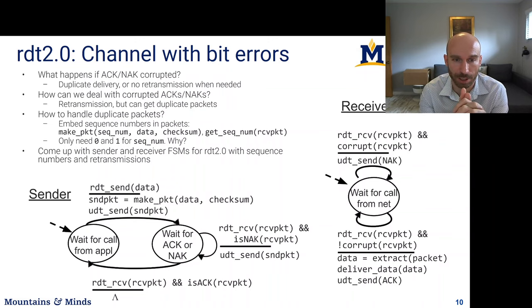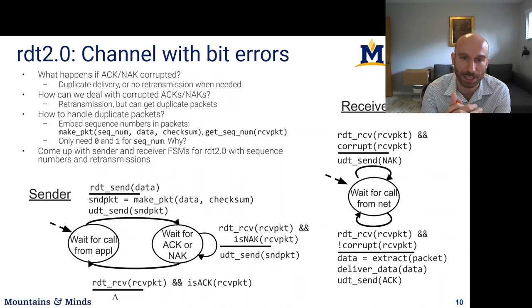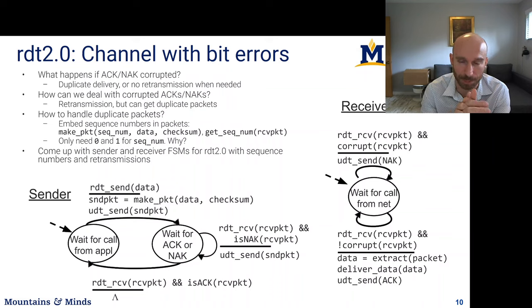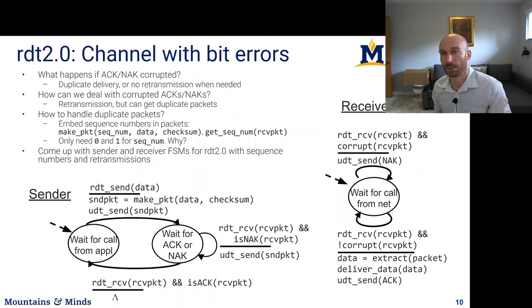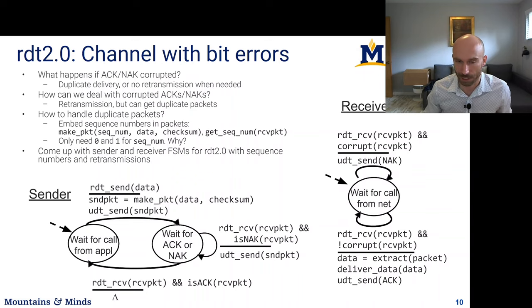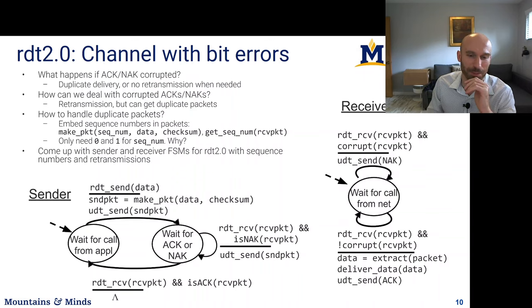Your task, which should take you a little while, is to come up with the finite state machine for the sender and the receiver of this RDT 2.0 mechanism using sequence numbers and retransmissions. Good time to pause the video. If you've paused and come up with your own finite state machine, let's look at the solution.